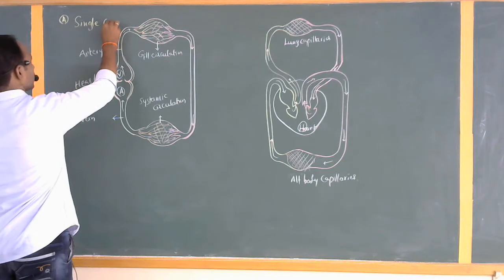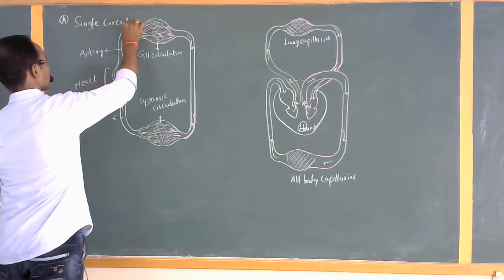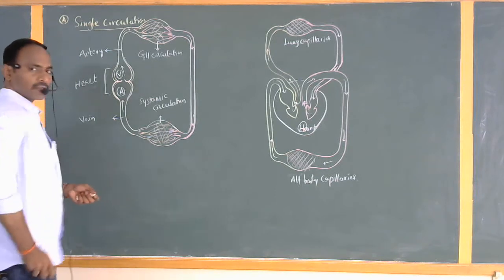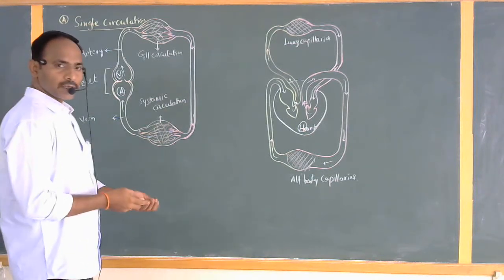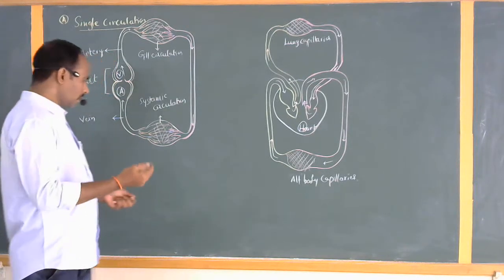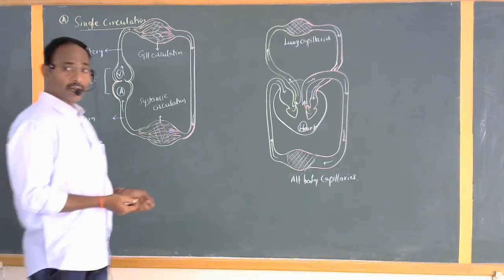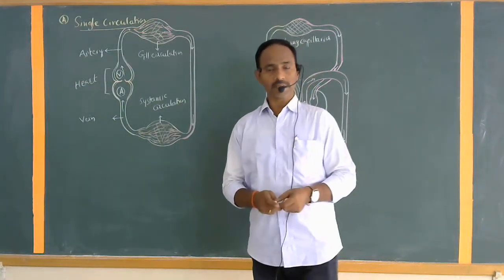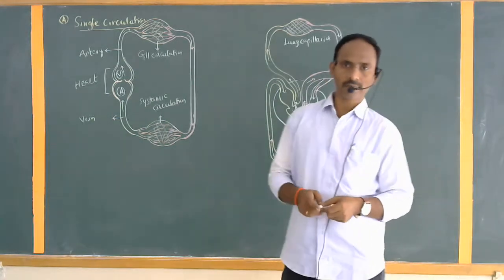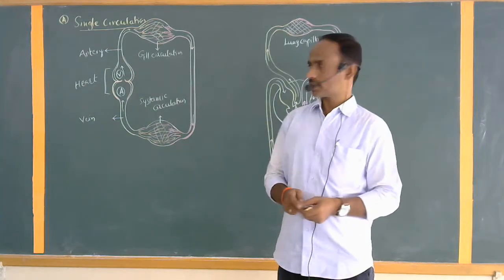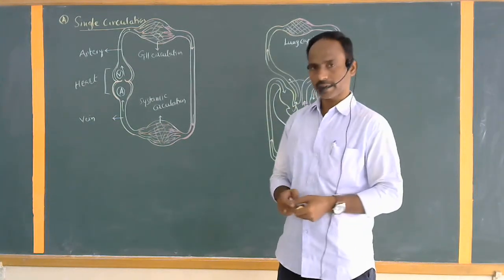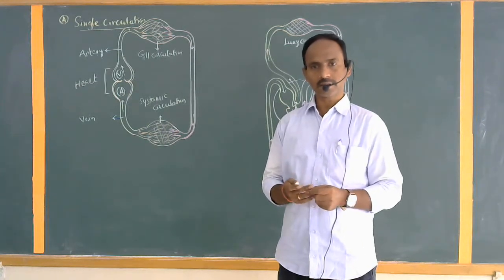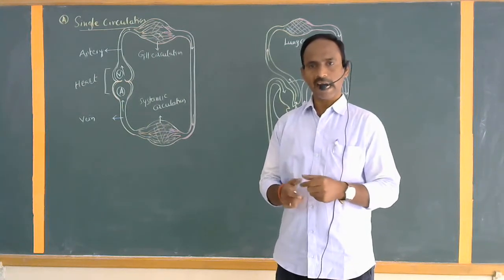Single circulation — what is meant by single circulation? Vertebrates are organisms which possess a clear-cut spinal cord or vertebral column. These include fishes, amphibians, reptiles, birds, and mammals.